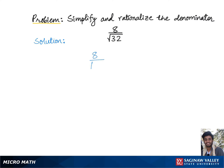To rationalize the denominator of 8 over square root of 32, we need to break down this 32 as a multiple of the highest possible perfect square. So we have 8 over square root of 32 can be written as 16 times 2.